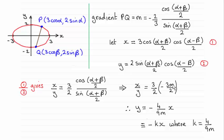And then, just by rearranging this, I can get a relationship between Y in terms of X. And you can see that this is identical in form to minus KX, where K clearly has to be 4 over 9M.